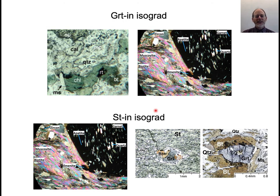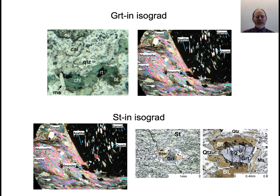Here's the garnet-in isograd. The main reaction starts with chlorite, biotite, muscovite, and sometimes a little carbonate, and that reacts to form garnet — essentially chlorite plus quartz goes to garnet plus water. You end up with a rock that has garnet and biotite, maybe a little chlorite. The staurolite-in reaction is where the garnet-chlorite tie line breaks down to form staurolite plus biotite as the stable tie line. That's one of the crossing tie-line reactions and it's important for how staurolite first comes in.